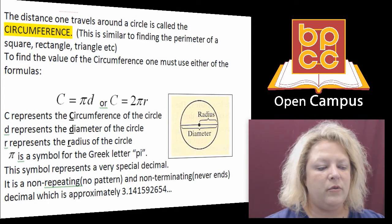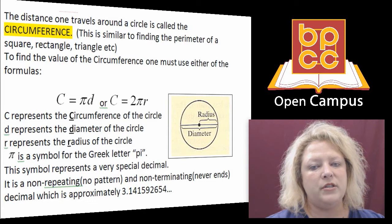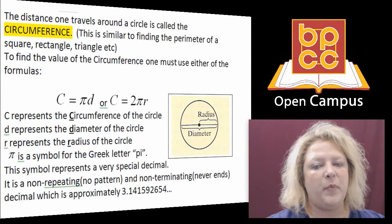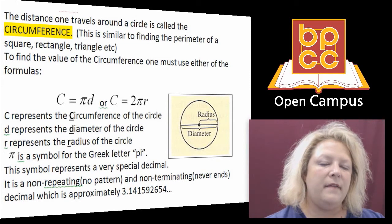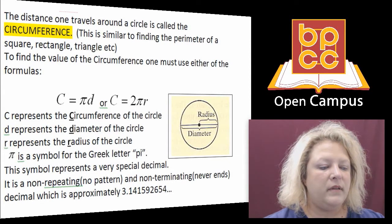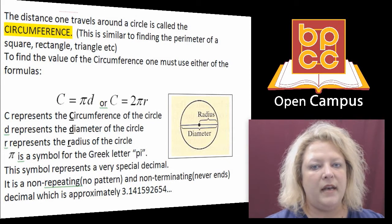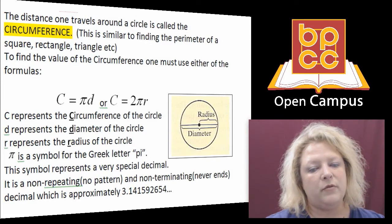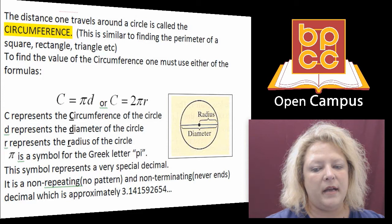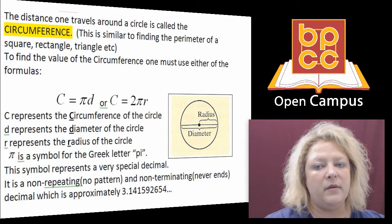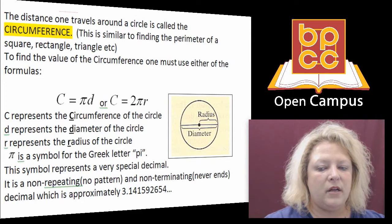So we're going to do two different things. First I'm going to show you the exact value of the circumference of a circle, and that will involve leaving the pi symbol in the answer. And then we're going to do the approximate value, because we're going to round pi off. Knowing that pi is the decimal that never ends and it never repeats, so we round it off to 3.14.